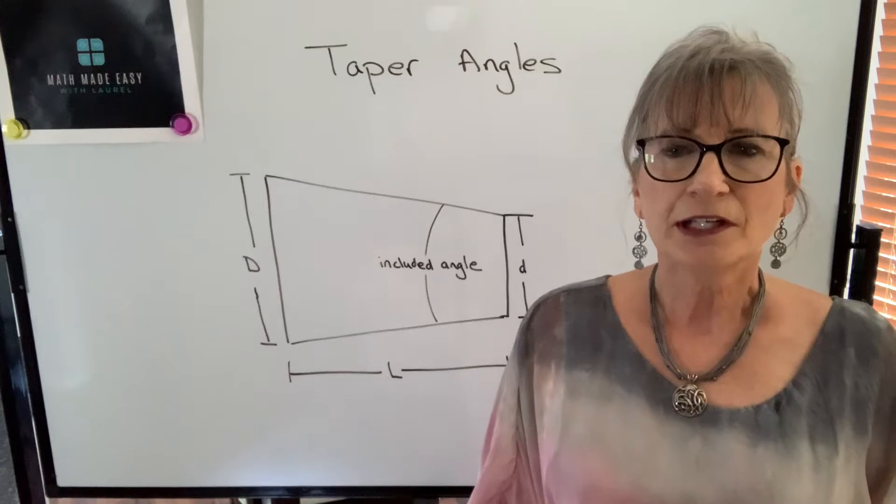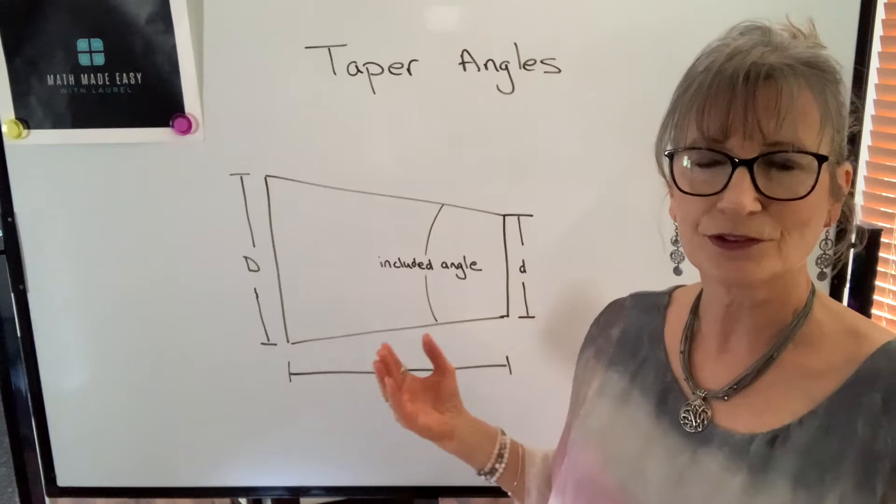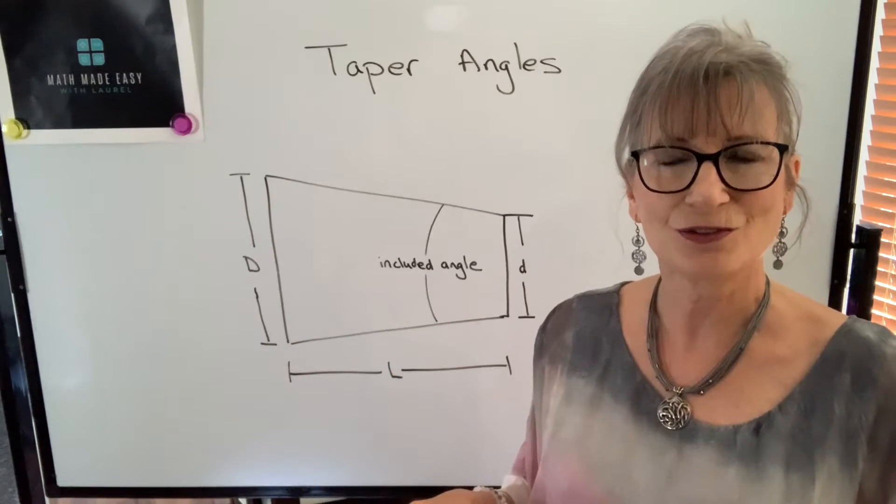So we're going to take a look at a couple of examples to find a missing piece of information when we know the other values. And we're going to use right triangles to do that.